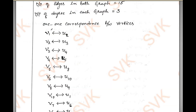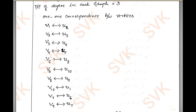Now let us prove this theoretically. We shall prove the one-to-one correspondence between vertices. From G1: V1 corresponds to U2, V2 corresponds to U3, V3 corresponds to U4, V4 corresponds to U5, V5 corresponds to U8, V6 corresponds to U10, V8 corresponds to U9, V10 corresponds to U1, V7 corresponds to U6, V9 corresponds to U7. All 10 vertices have been assigned correspondence from G1 to G2.